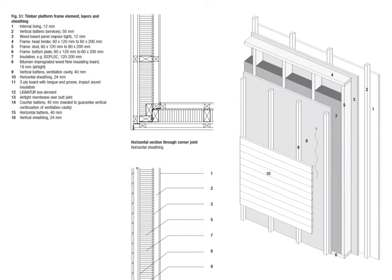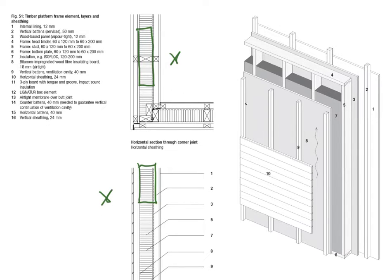With this specific construction, I want to start from the inside to the outer layer — from the core of that construction, the load-bearing and the insulating layers. On top we have a plan view that goes around the corner, here's the section, and on the right-hand side we have a really nice axonometric view of how that construction looks like.